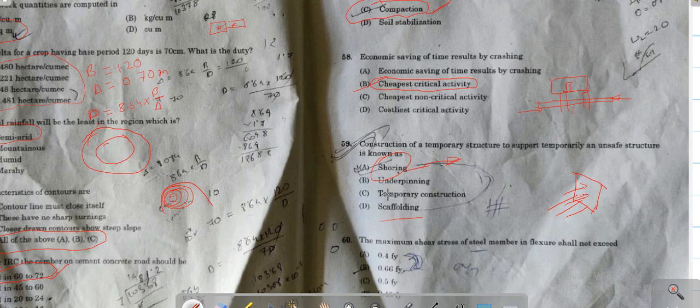So there's confusion between shoring, underpinning and scaffolding. Shoring is a temporary structure provided to support unsafe structure. Underpinning is pinning below the foundation. Scaffolding is the temporary structure for shuttering work where workmen need to climb. That is scaffolding. This question is regarding shoring.